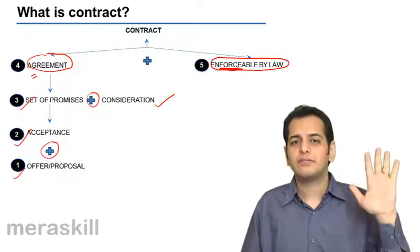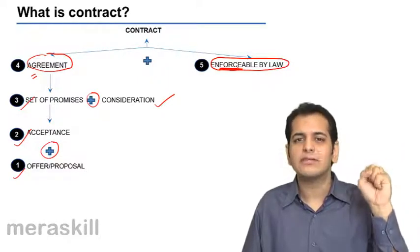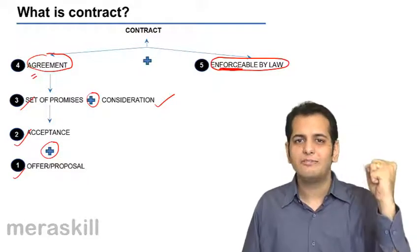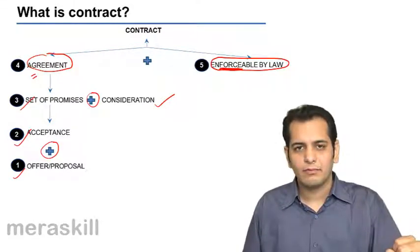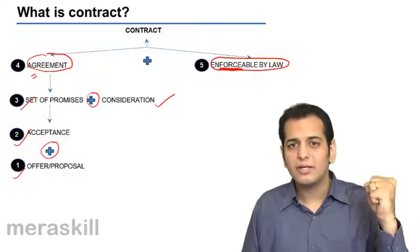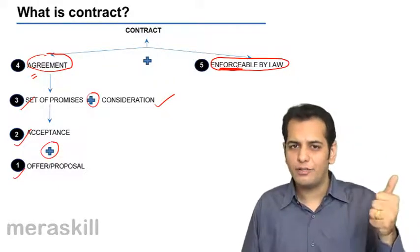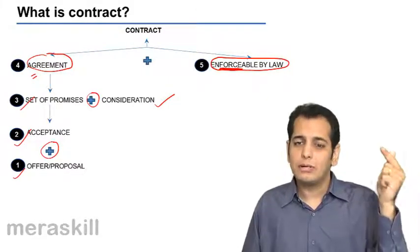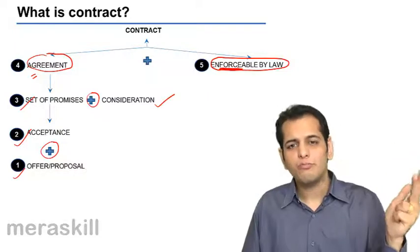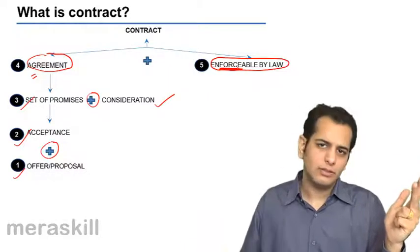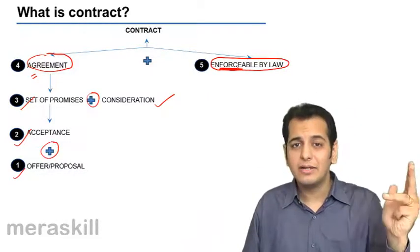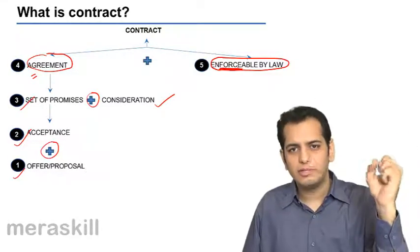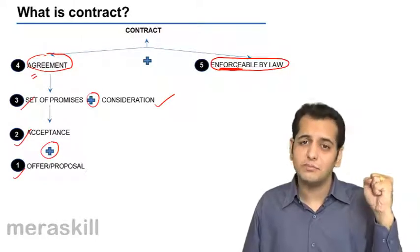So these are the five things that are required. When these five things combine and come together, what you have is a contract. For making a contract, you need offer; then the offer needs acceptance; when these two combine, it makes a promise; promise combining with consideration makes an agreement; and agreement, when it is enforceable by law, becomes a contract. Please remember these five things.